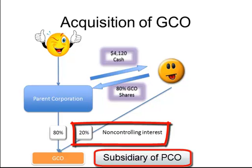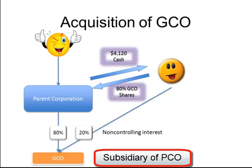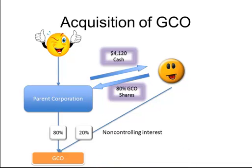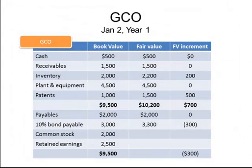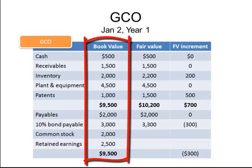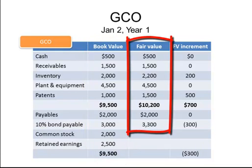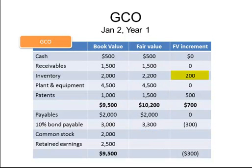Parent corporation now has to consolidate GECO in preparing its annual financial statements to comply with GAAP. At the date of acquisition, GECO had assets and liabilities as reflected in this table. The first column summarizes book value and the second summarizes fair values. Of note: inventory had a fair value in excess of book value by $200,000; patents were higher than book value by $500,000; and the recently issued bonds had a fair value in excess of book value by $300,000 — presumably because interest rates had dropped, making the 10% coupon more attractive than at the time of issuance.